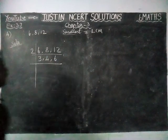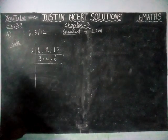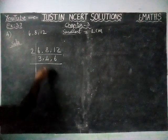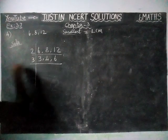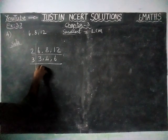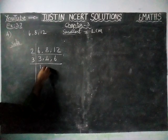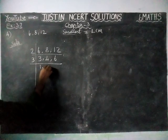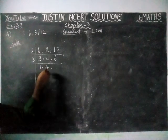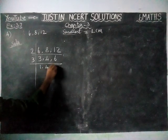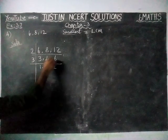Now again we can divide by a common number. Here we have 3, 4, and 6. We can divide by 3. 1 three is 3, 4 cannot be divided so we return it as it is, and 2 threes are 6.